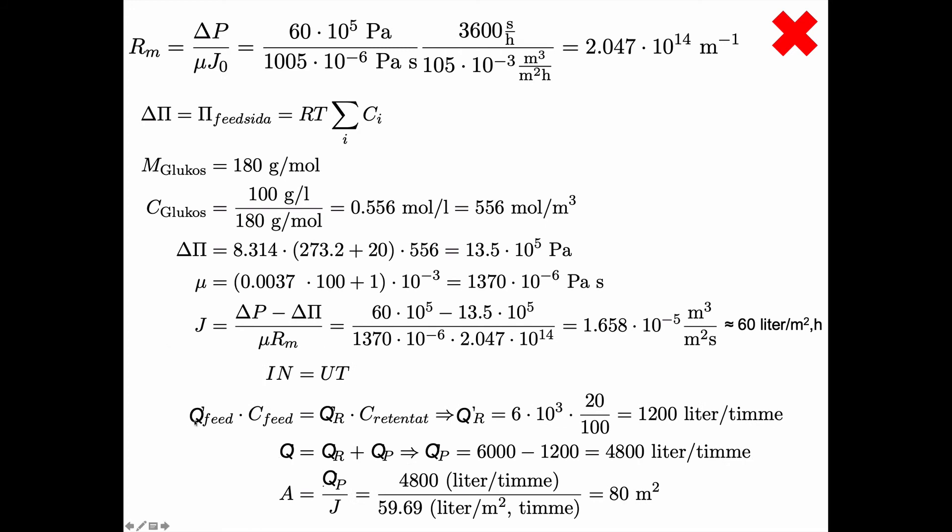Sorry it looks a bit messy here. I change notation from F to Q for the volumetric flow so the mass balance becomes the volumetric flow of the feed times the concentration of the feed. That's what's coming in. What's coming out must be the volumetric flow of the retentate times the concentration of the retentate and there is nothing in the permeate. So the volumetric flux of the retentate must be the volumetric flux of the feed. And what was that?